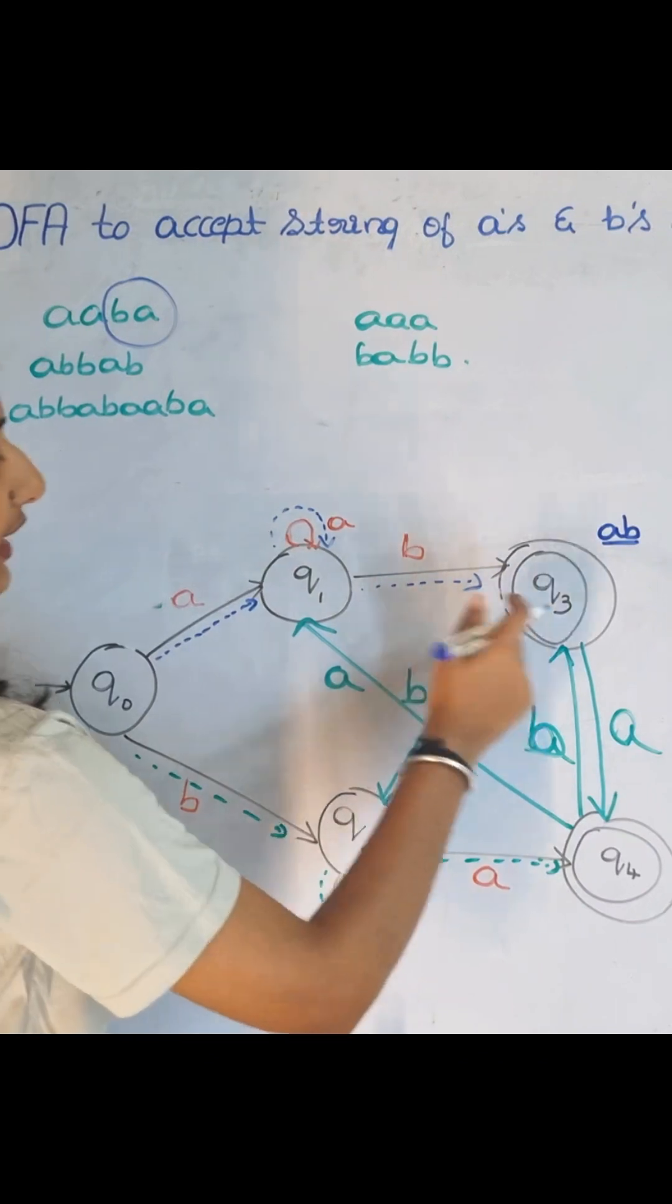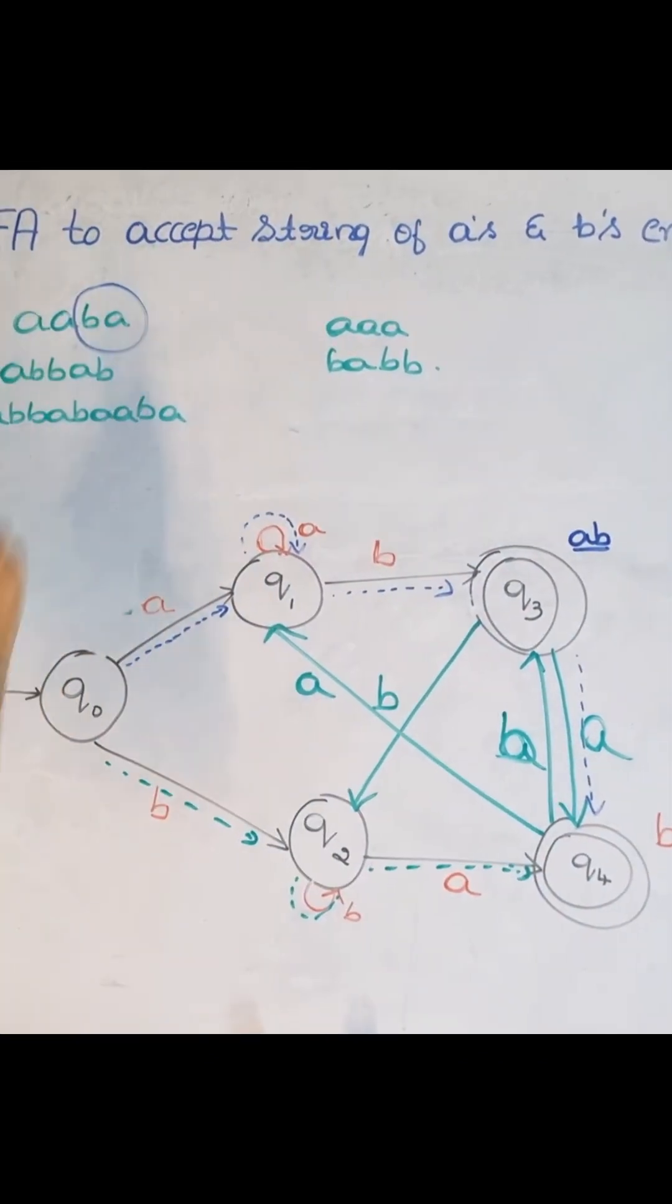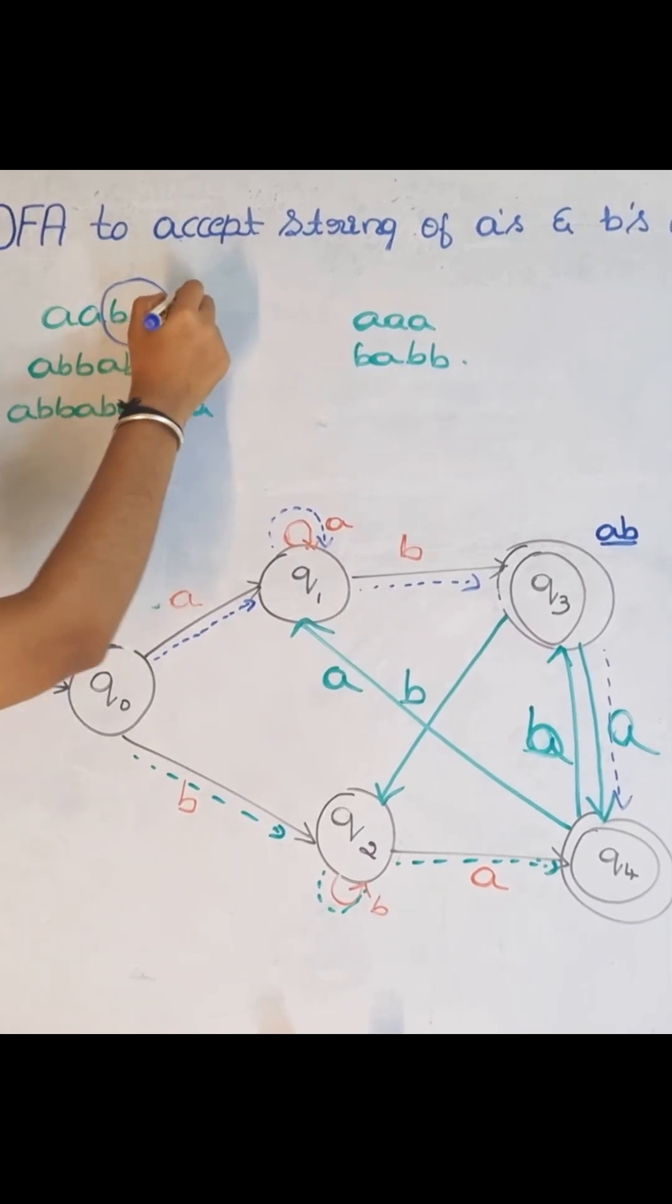So A, A, B is done. Now it should move to Q4 on A. So this is getting accepted.